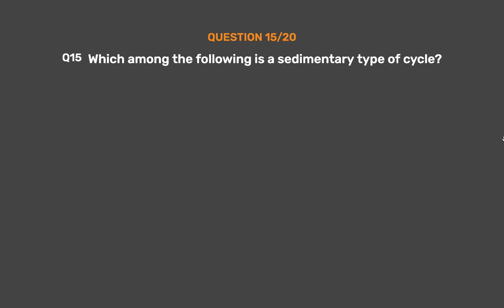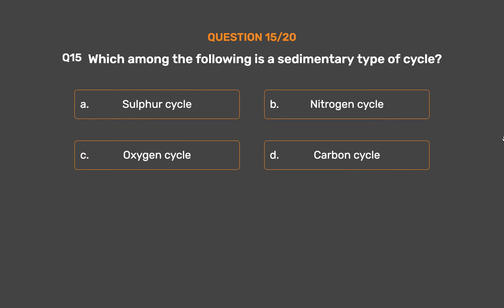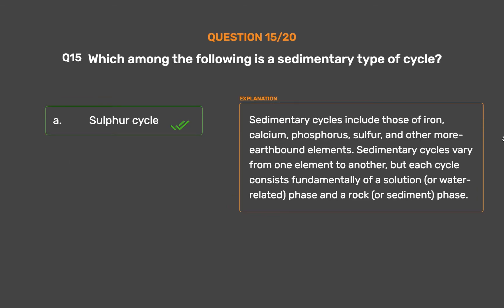Question number fifteen: which among the following is a sedimentary type of cycle? Option A: sulphur cycle. Option B: nitrogen cycle. Option C: oxygen cycle. Option D: carbon cycle. The correct answer is option A, sulphur cycle. Sedimentary cycles include those of iron, calcium, phosphorus, sulfur, and other more earthbound elements. Sedimentary cycles vary from one element to another, but each cycle consists fundamentally of a solution (or water-related) phase and a rock or sediment phase.